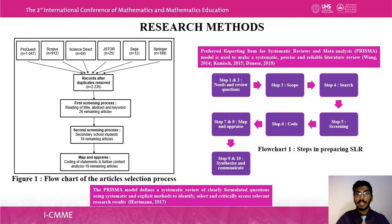The Preferred Reporting Items for Systematic Reviews and Meta-Analysis (PRISMA) model is used as the research method to make a systematic, precise, and reliable literature review. There are 10 steps followed in preparing this systematic literature review.